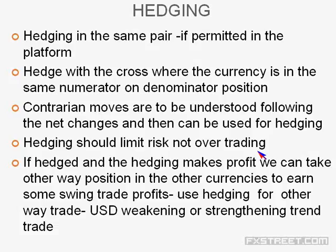When hedging with different currencies that are not making the correct contrarian move, say Euro is trading around 1.3202 and you take a buy position expecting 30-45 pips profit, you can keep a hedging order in Euro/GBP. When Euro drops, Euro/GBP will also drop, so you keep a sell limit order in Euro/GBP — say it's trading around 0.8085, then 30 pips below at 0.8055 you keep a sell limit order as a contingency.